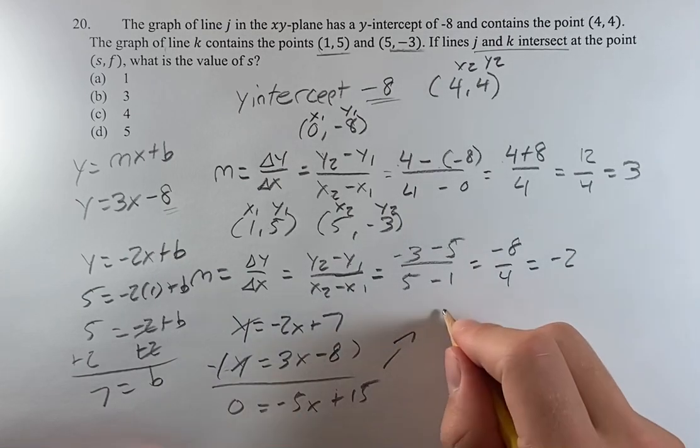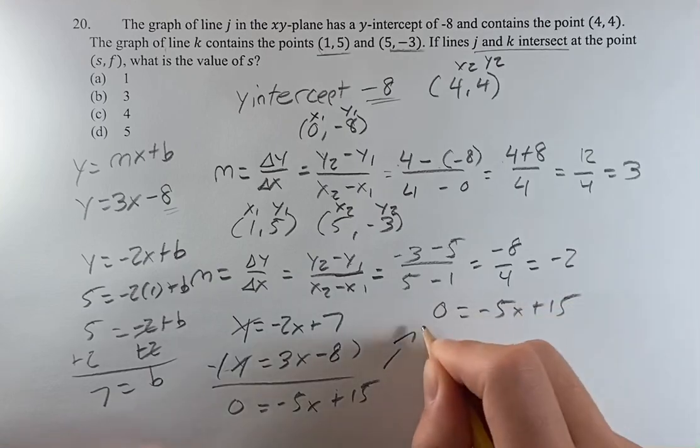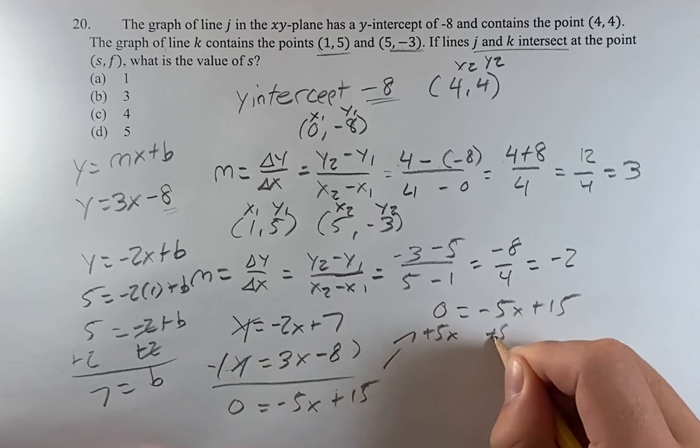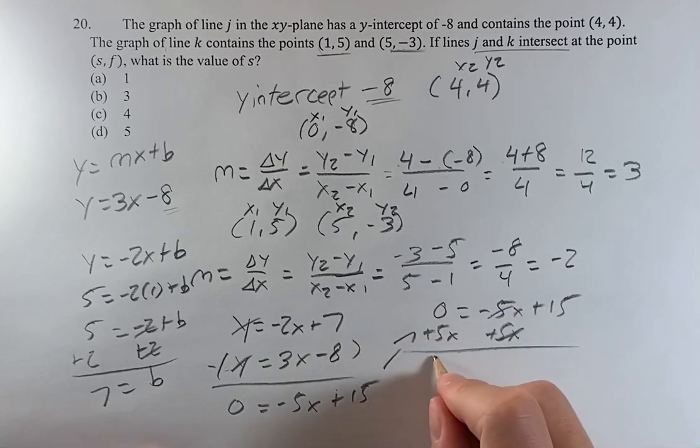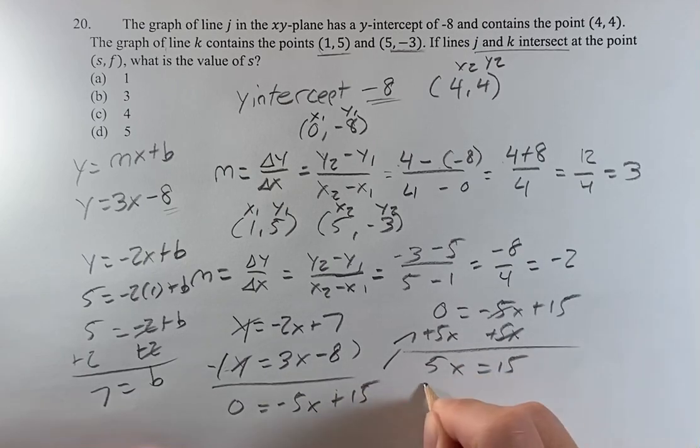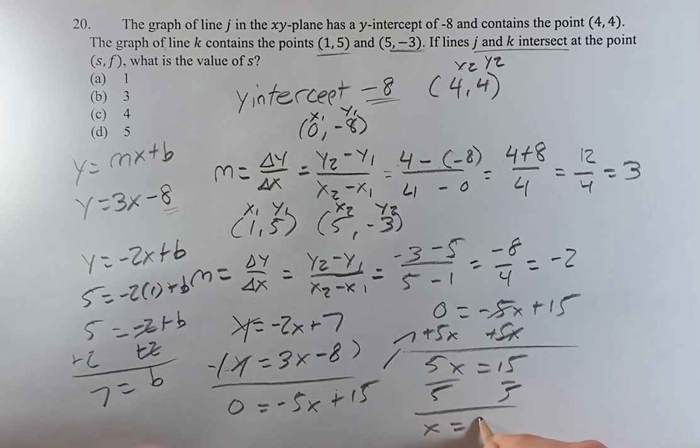Bringing this up here, 0 = -5x + 15. If we add 5x to both sides, these cancel. We get 5x = 15. Dividing by 5 on both sides, we get x = 3.